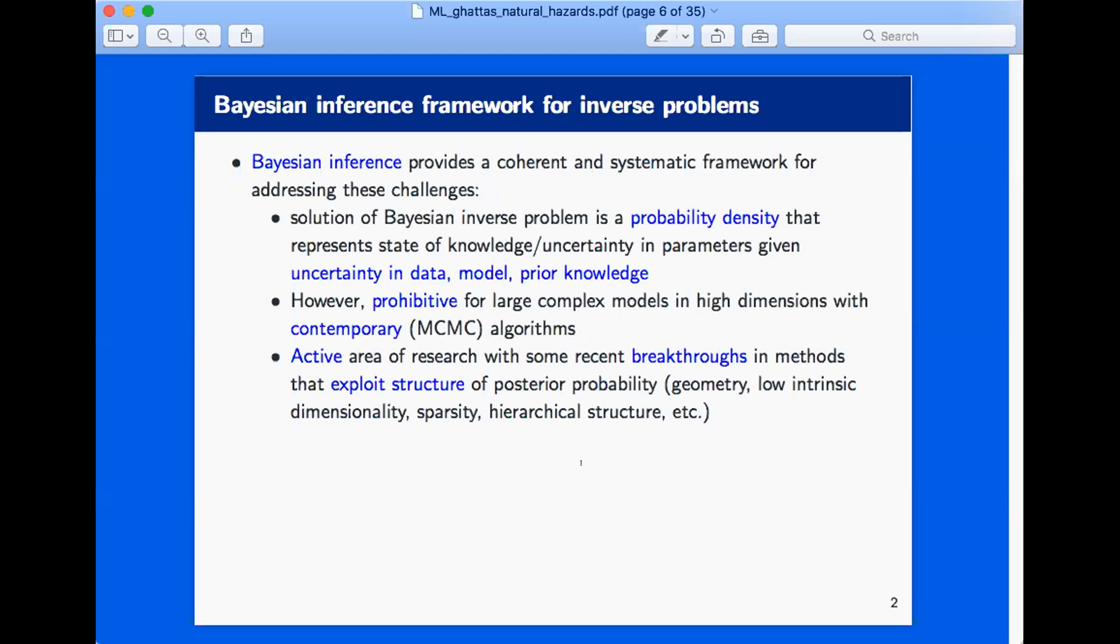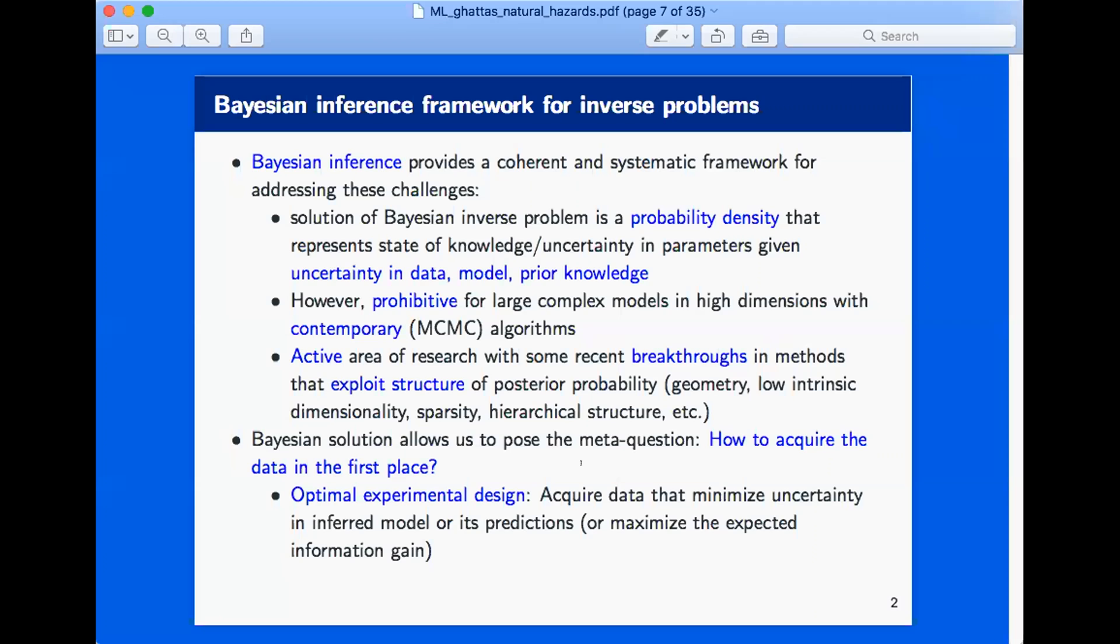The key is you have to exploit problem structure: the geometry, the low intrinsic dimensionality, sparsity, hierarchical structure, and so on. So you try to exploit the structure of the posterior probability. I won't have time to get into this, but this is a very active area of research. And assuming we can do it—and we can do it for moderately large systems—there are a few occasional breakthroughs where one can exploit problem structure and execute Bayesian inference with expensive forward models in high dimensions. In a few limited cases you can do it. You really have to exploit this problem structure, you have to put years of work into it.